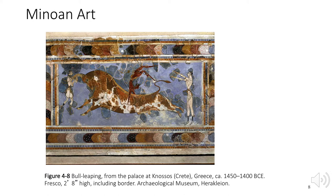This fresco depicts the Minoan ceremony of bull leaping, in which young men grasp the horns of a bull and jump onto its back. This work displays the artistic convention of depicting young women with fair skin and young men with dark skin — common in ancient work to distinguish female from male. The figures are highly stylized with pinched waists and curving lines.